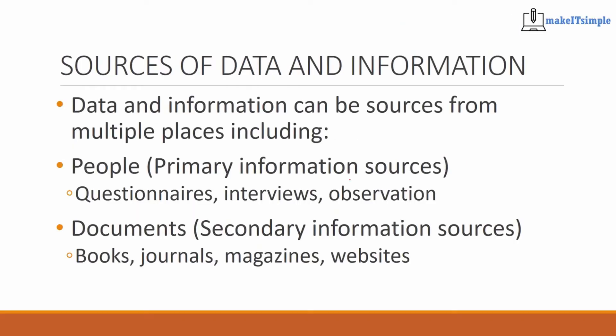So where do we get information from? Well, a lot of times we get information from places that require people, and usually people are the good thing and people are also the problem. So you have multiple sources where information can come from — you have primary information sources and then secondary information sources.